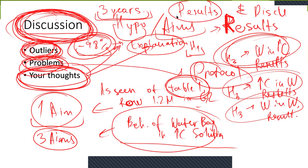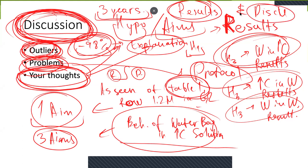I've seen many people writing results and discussion in the same section. Please separate them because it is easy to write everything in the same section, but you hit yourself in the future because you don't practice separating your own thoughts from the results. If you work on this separation now, you will be able to write articles in a very appropriate way. And sometimes when you are asked to combine them, you will do it easily because you know how everything is done without combining those sections. I don't want to see a single combined section.